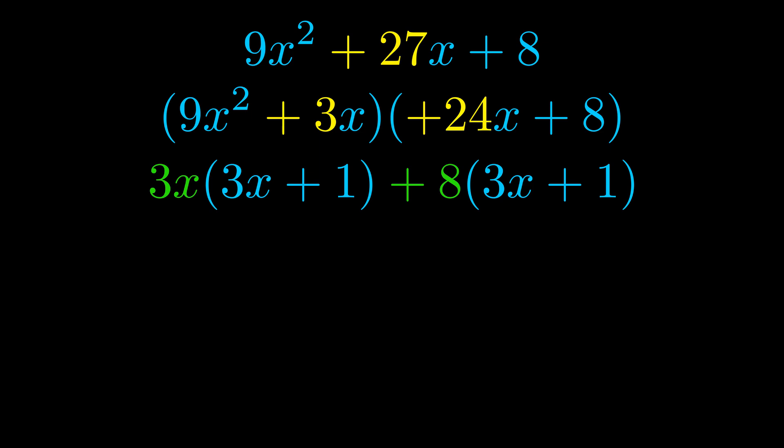Notice also how what remains inside of the parentheses is the same in both cases. The blue values are the same. Those blue values will become one of our factors and we will combine the two green values, the GCFs that we pulled out, to get the other one. And that is our fully factored equation.